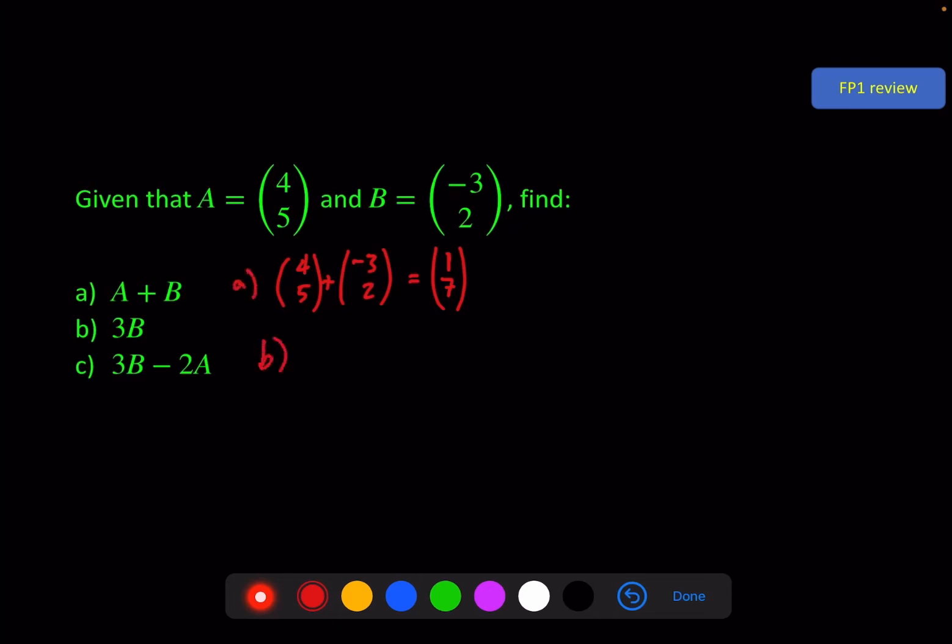Part b, 3 times b. We multiply the 3 by each of the two elements. To give minus 9, 6.